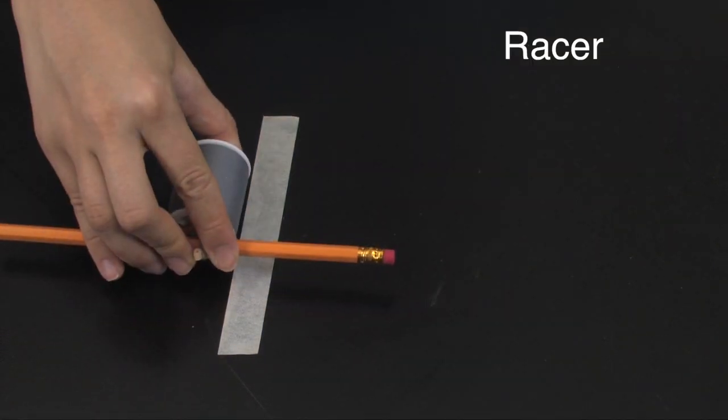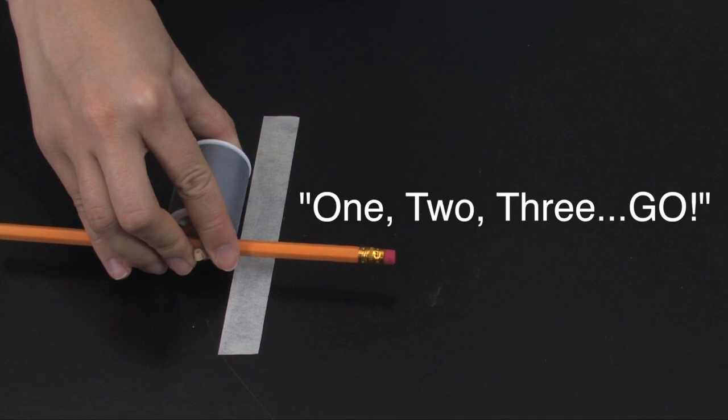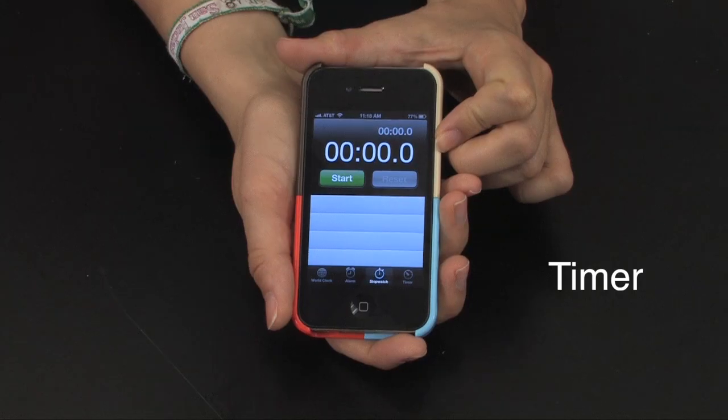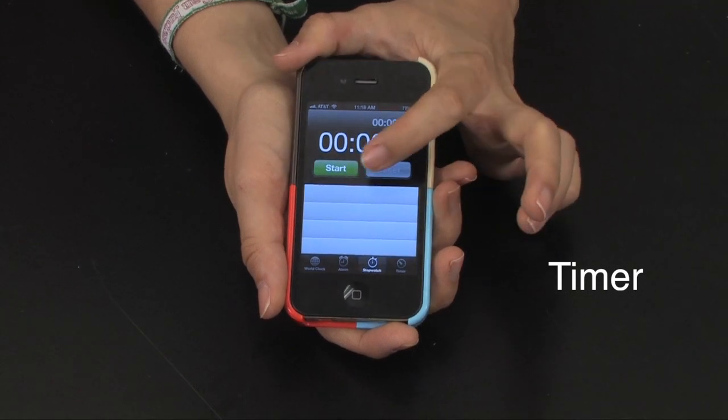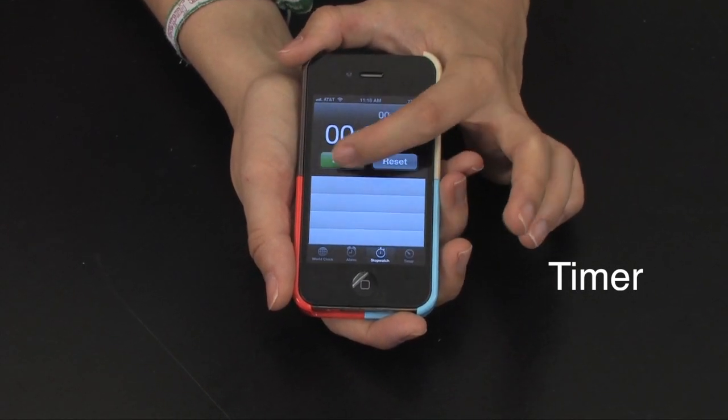The racer places the spool at the starting mark and says one, two, three, go, and releases the spool racer. The timer starts the stopwatch on go and stops when the spool racer stops moving.